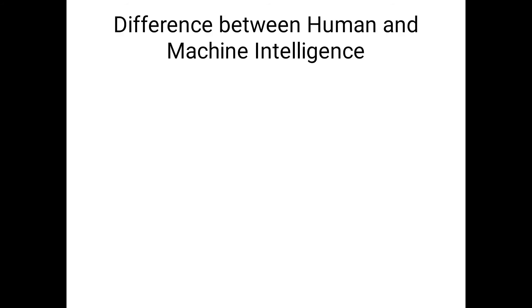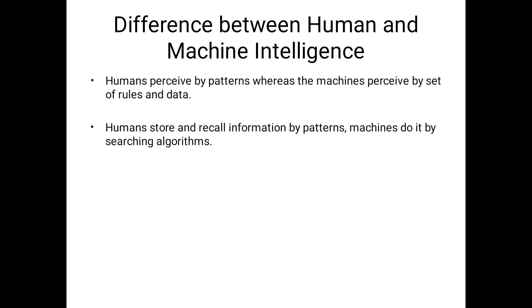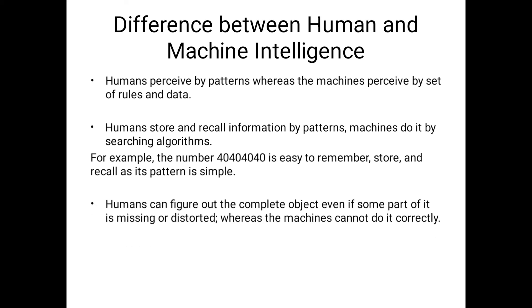Now, the differences between human and machine intelligence. Humans perceive by patterns, whereas machines perceive by a set of rules and data. Humans store and recall information by patterns, but machines depend on searching algorithms — for example, identifying a number like 404040. Humans can figure out a complete object even if some part of it is missing or destroyed, but artificial intelligence requires specific algorithms to do the same.